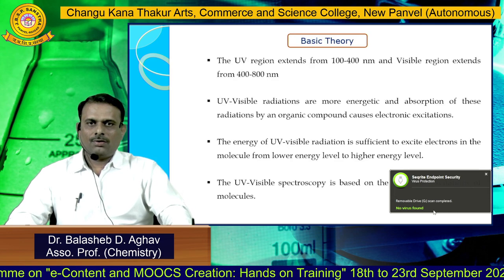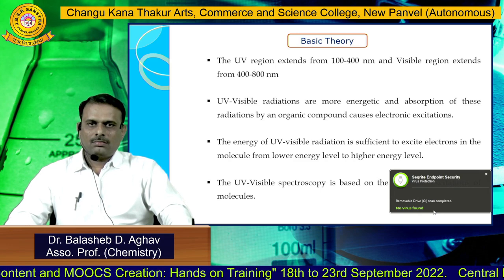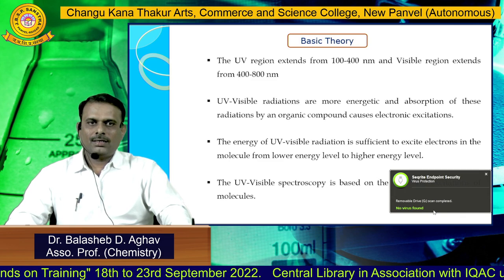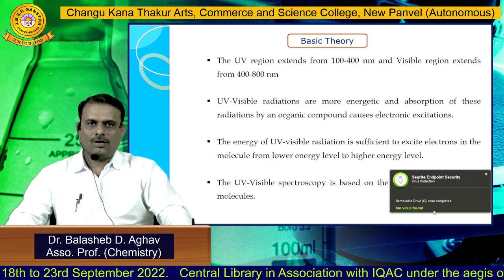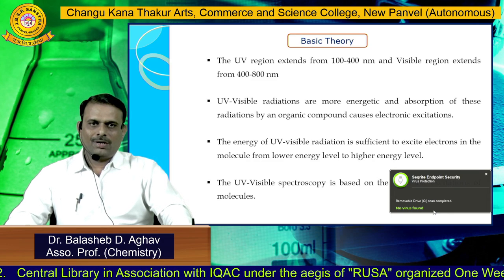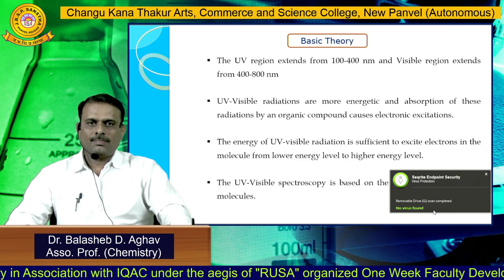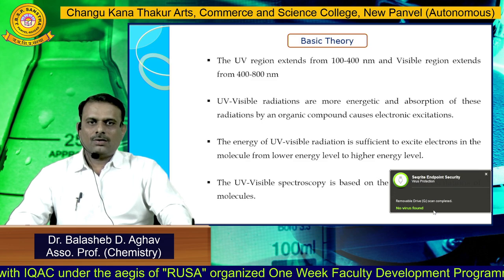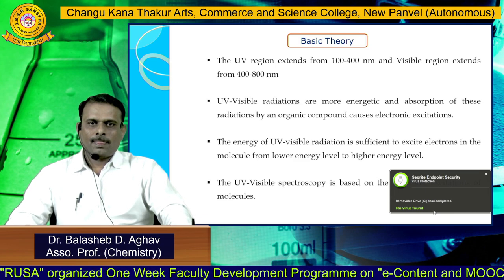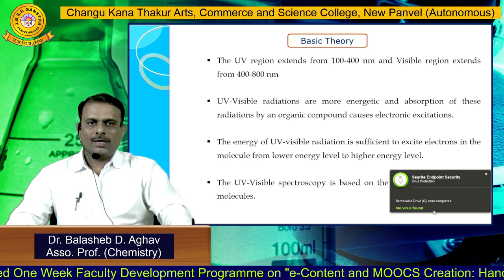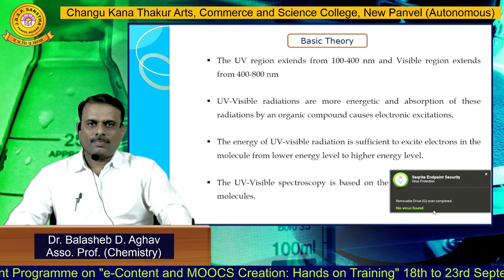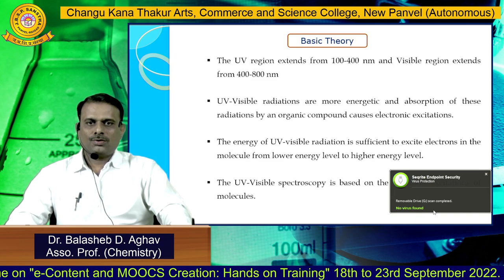The basic theory behind UV-visible spectroscopy is that the ultraviolet region extends from 100 nanometers to 400 nanometers and the visible radiation region extends from 400 to 800 nanometers. These are high-energy, low-wavelength radiations, and the energy of ultraviolet radiation is sufficient to cause electronic excitation in the molecule — promoting it from a lower energy level to a higher energy level. Hence, UV spectroscopy is also called electronic spectroscopy.